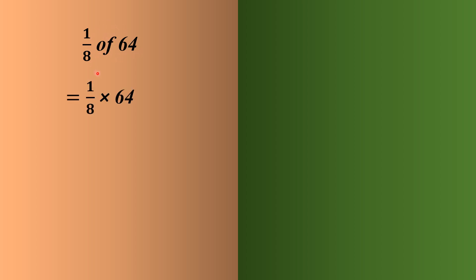First question is 1/8 of 64. Here, 1/8 is a fraction and 64 is a whole number. We have to find the 1/8th part of 64. 'Of' means we multiply — so 1/8 multiplied by 64. We multiply the numerator by the whole number: 64 by 8, and 64 divided by 8 gives the answer 8.